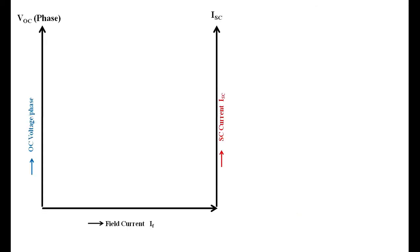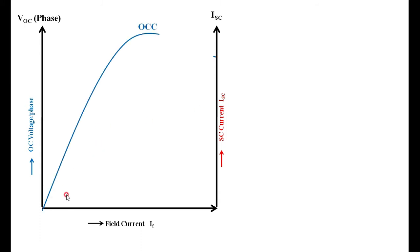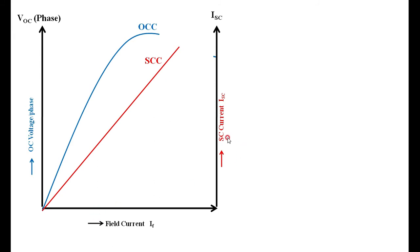To summarize the graphical procedure: first, take the field current as the common base. On one Y-axis, take the open circuit voltage (VOC); on the other, take the short circuit current with a different scale. Draw the open circuit characteristics by marking points for different values of field current against the corresponding open circuit voltage. Similarly, draw the short circuit characteristics using the same field current values.